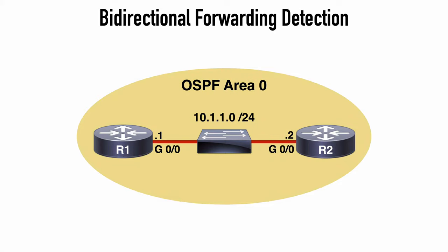So let's look at a use case for this. Here we have a topology with two routers, and between those is a Layer 2 switch. These routers are OSPF neighbors with one another. Let's say that the physical interface between R2 and our Layer 2 switch goes down. R2 will obviously tear down the OSPF adjacency based on this link failure. However, as far as R1 is concerned, at least for some time, the link between itself and the Layer 2 switch is still functioning, so it has no awareness of the failure event on the other side of the switch.